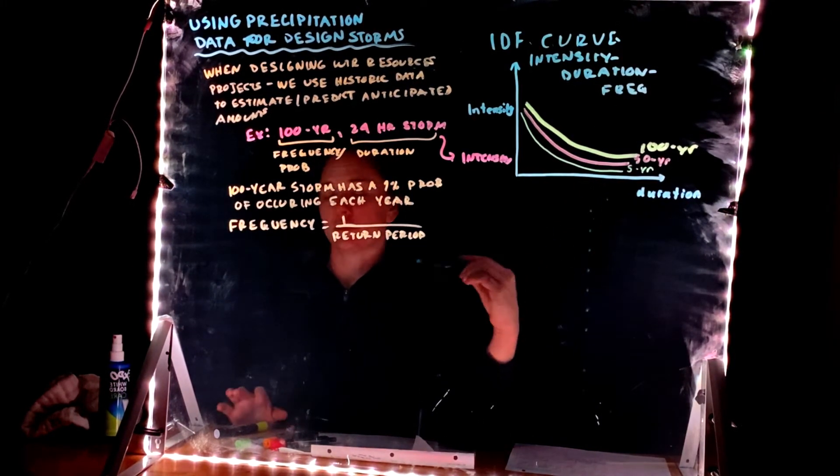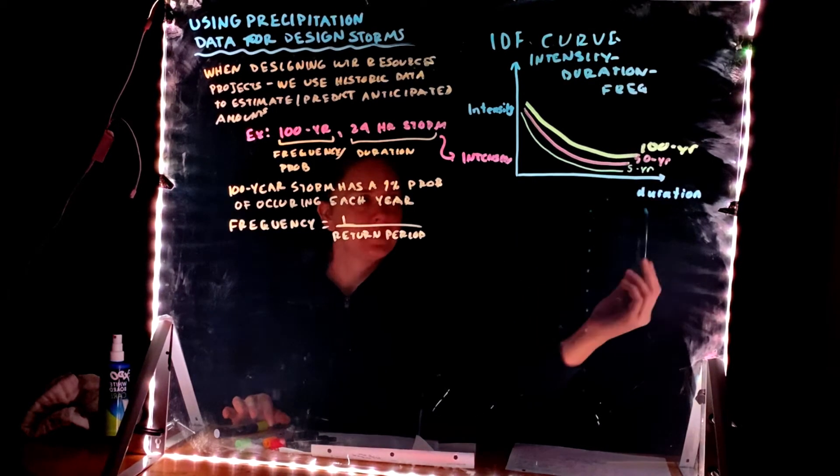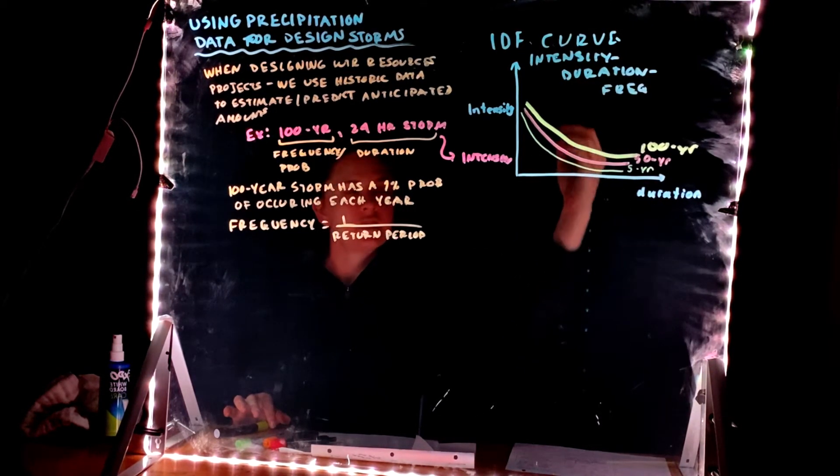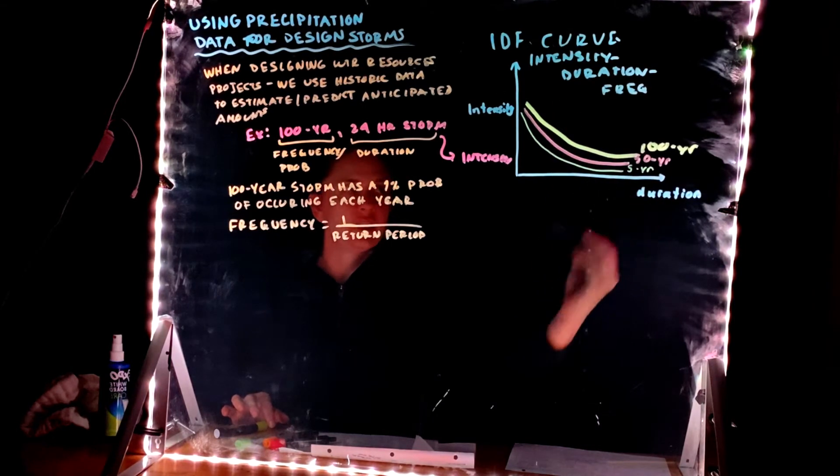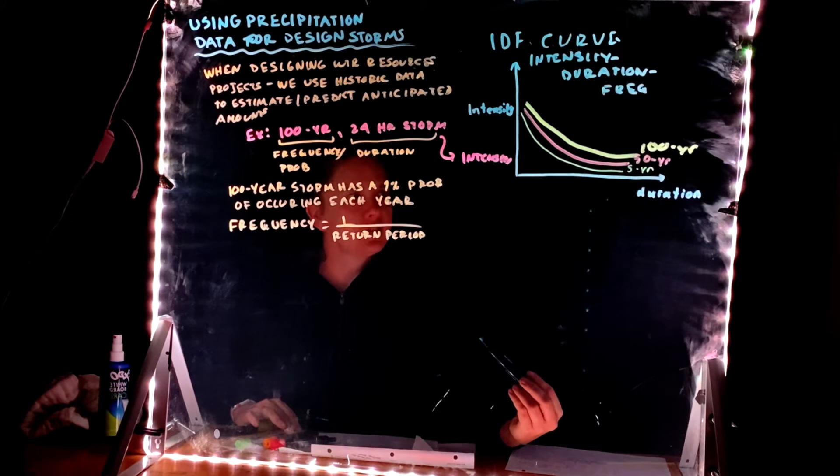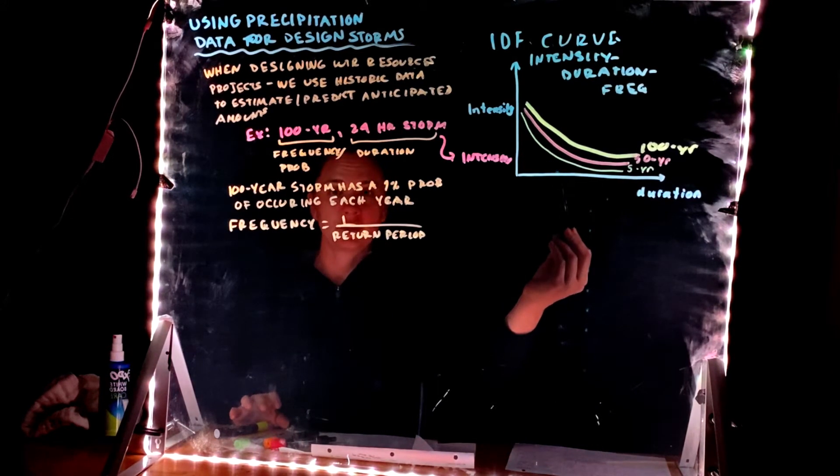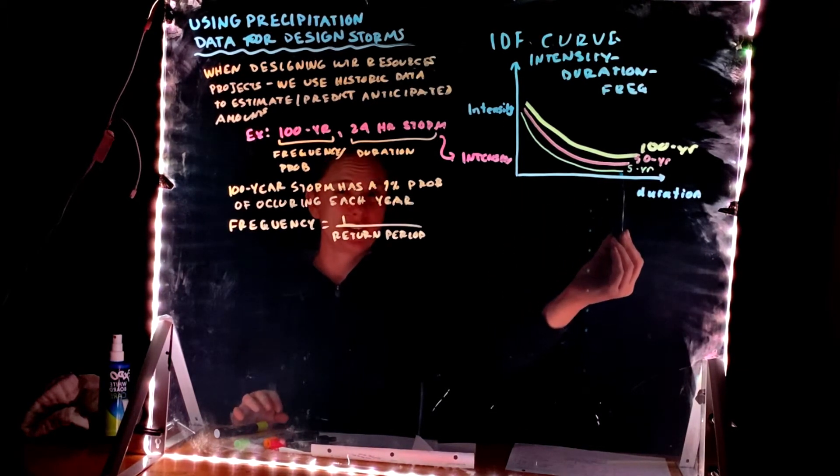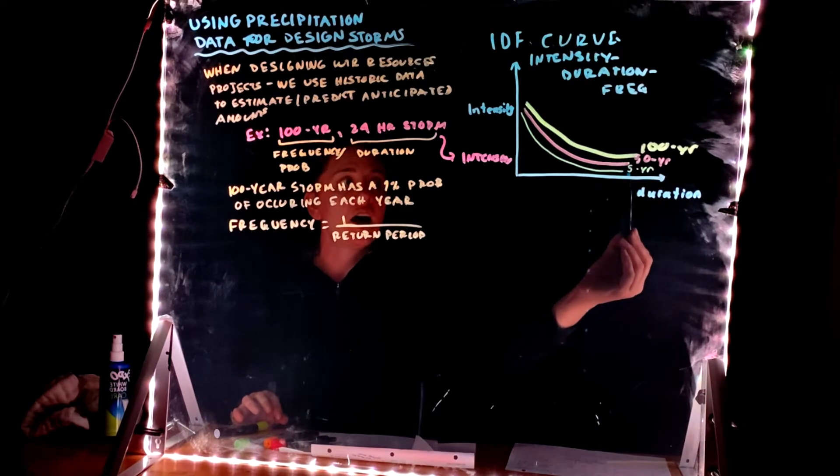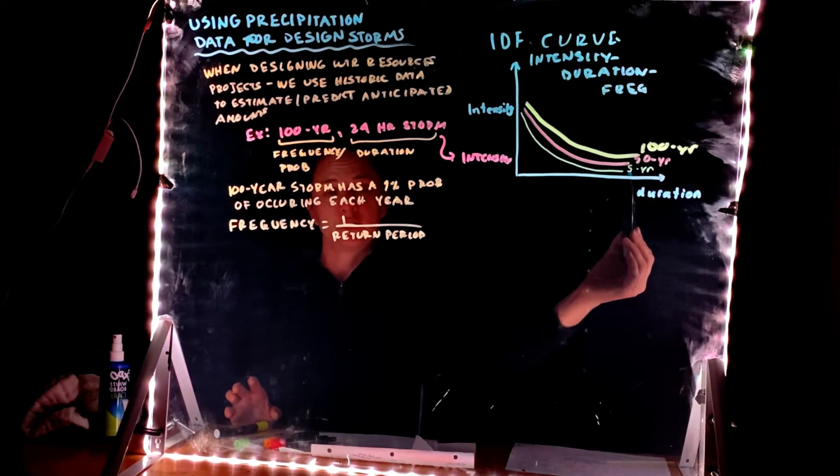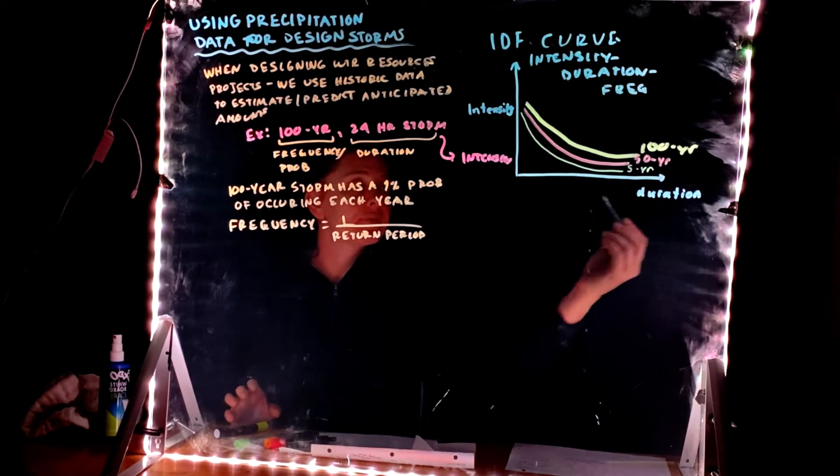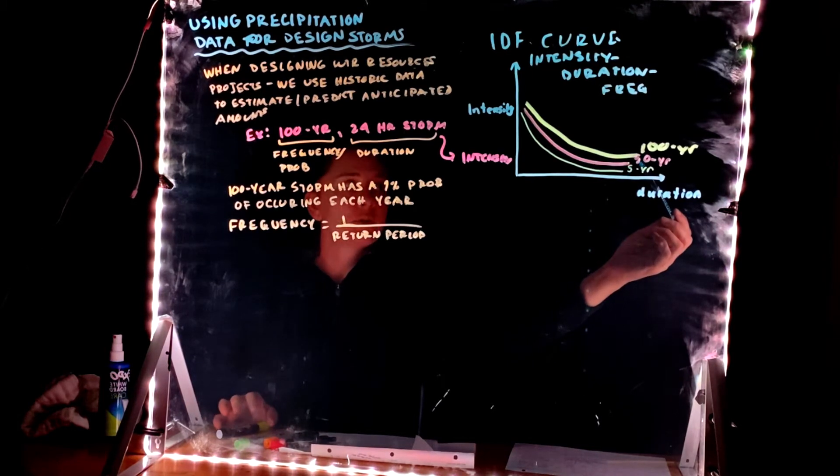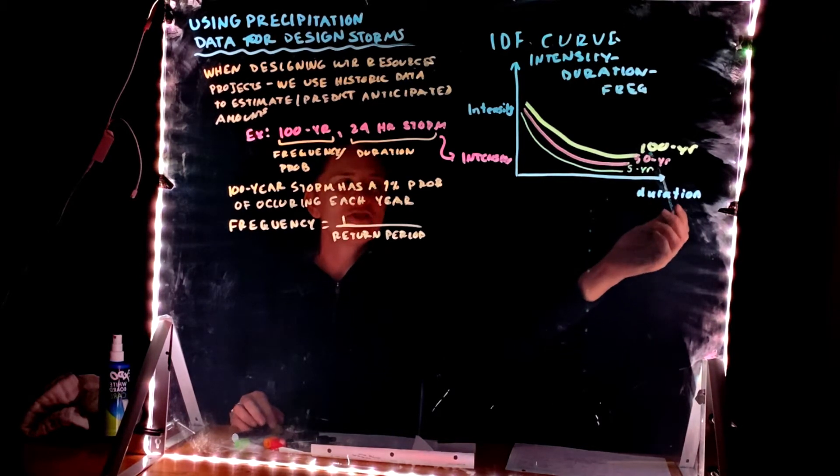So it has all three of those represented in this figure. In this particular case, and you'll see them different ways, we'll talk about this when we meet, the duration is shown on the x-axis, the intensity on the y-axis, and each of these lines is for a different frequency. So this one, this particular example that I've drawn, gives the intensity and duration for three different return periods or frequencies. A five-year storm, which is going to be the probability of recurrence in a particular year of one over five, or 20 percent. A 50-year, which has, sorry, that one is, a 100-year storm is a one percent.